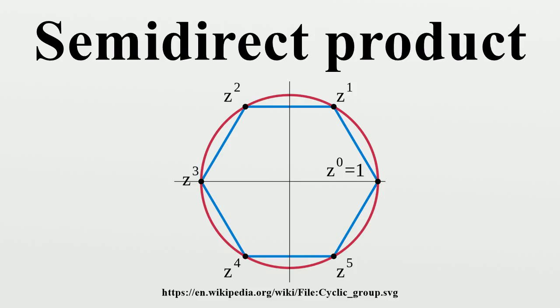One also says that G is a semi-direct product of H acting on N, or even a semi-direct product of H and N. To avoid ambiguity, it is advisable to specify which of the two subgroups is normal.